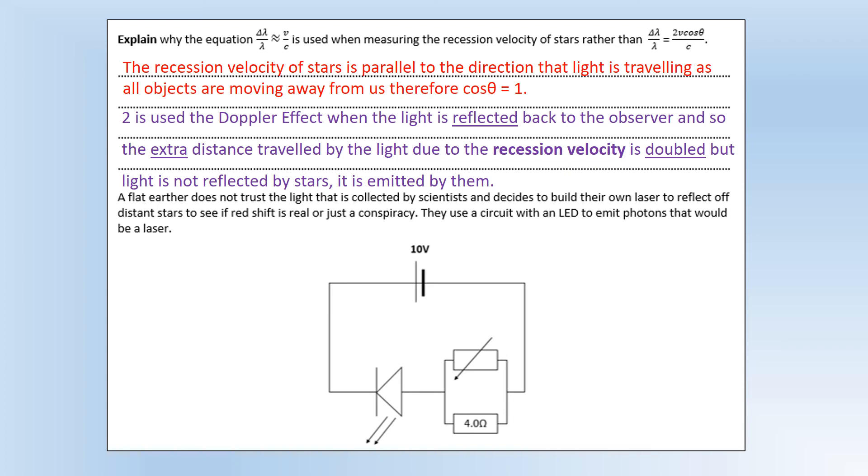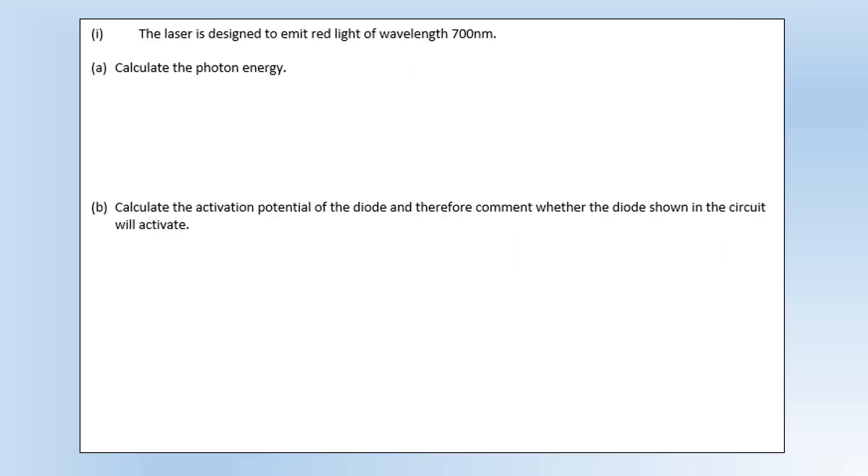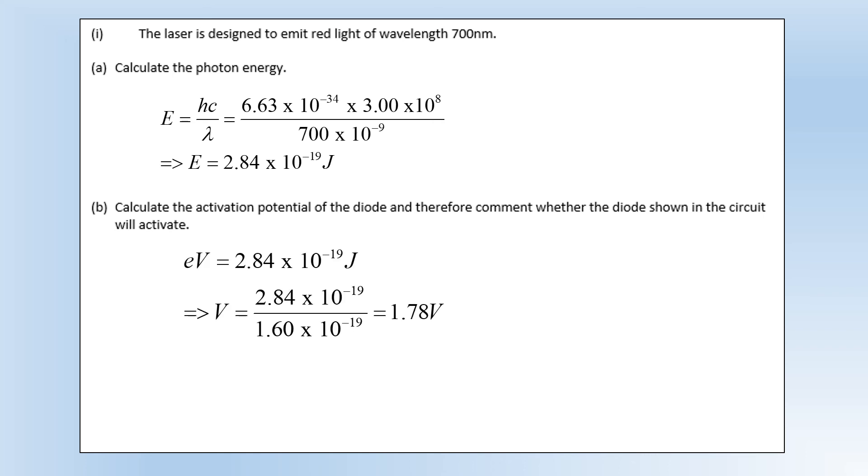Okay, so a flat earther does not trust the light that is collected by scientists and decides to build their own laser to reflect off distant stars to see if redshift is real or just a conspiracy. They use a circuit with an LED to emit photons, that would be a laser. So this is a very basic looking laser, here's your circuit. Okay, so the laser designed to emit a red light of wavelength 700 nanometers. Calculate the photon energy. So this is fairly straightforward, we can just plug them into the equation, calculate our photon energy, good so far. Calculate the activation potential of the diode and therefore comment whether the diode shown in the circuit will activate. So activation potential basically means that one electron traveling through the diode has enough energy to cause excitation to produce a photon of the energy we've just calculated.